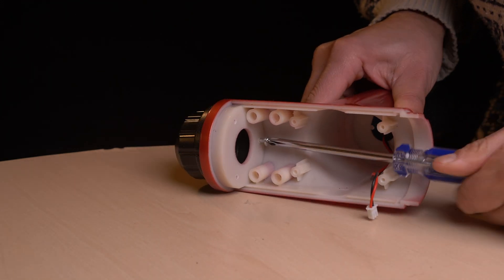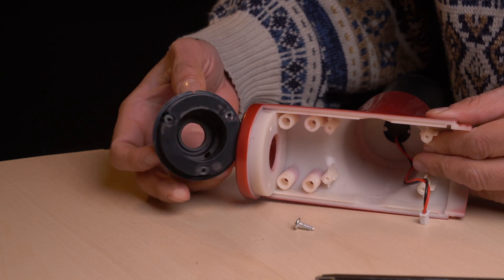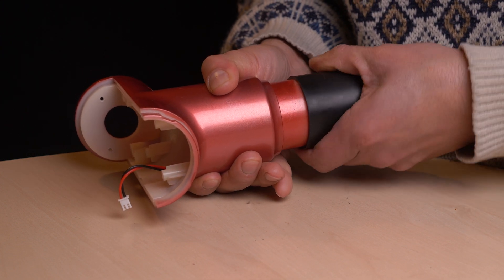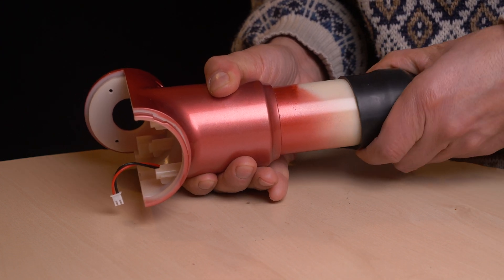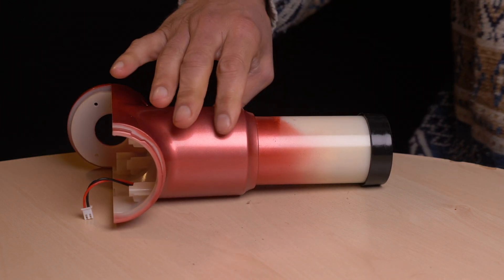These are the last 3 screws. They keep the front on. But the strange thing is, we don't have access to the battery yet. Taking off the rubber sleeve reveals nothing really. So, how do we get to the battery?